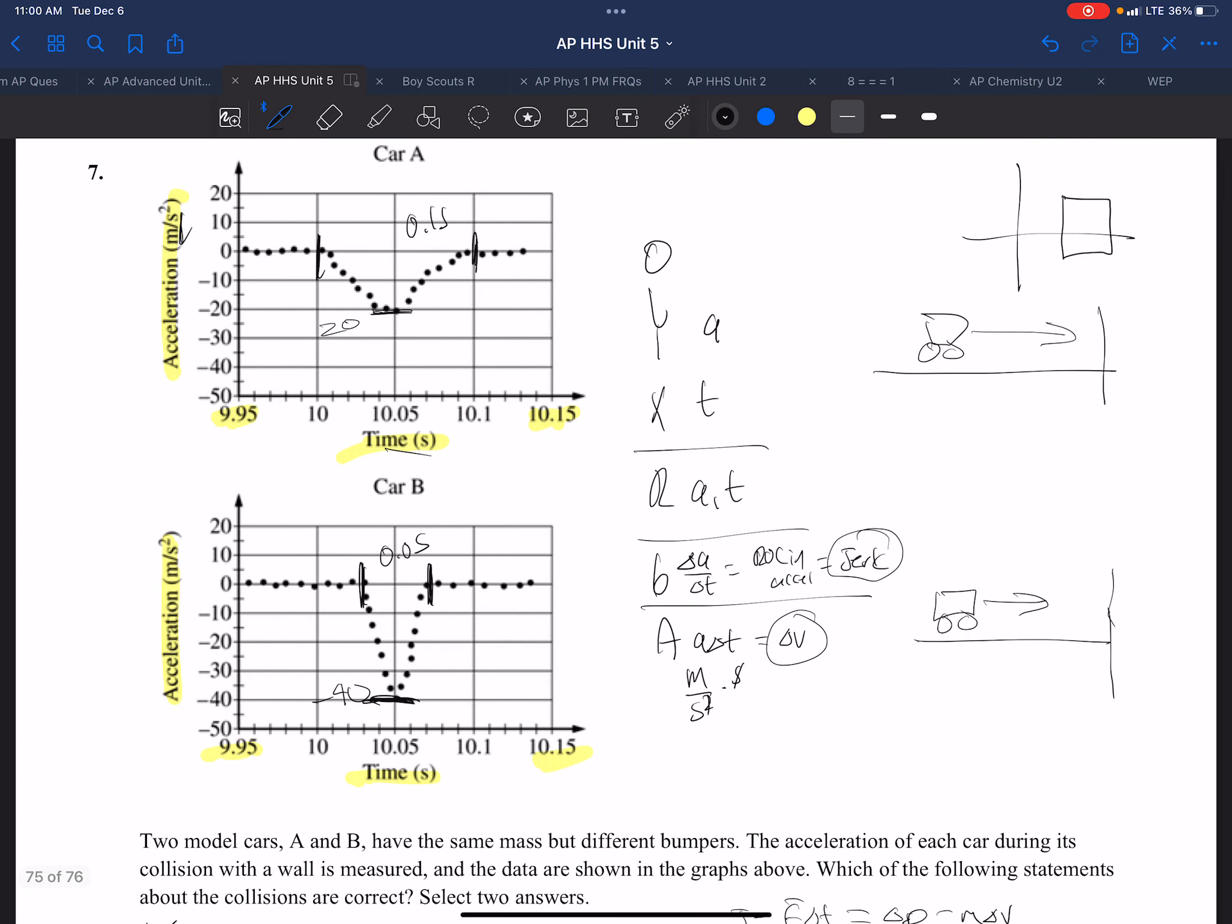And we can actually kind of draw that out. The maximum was 20, so the average would be 10. So we're looking at this area compared to this area.